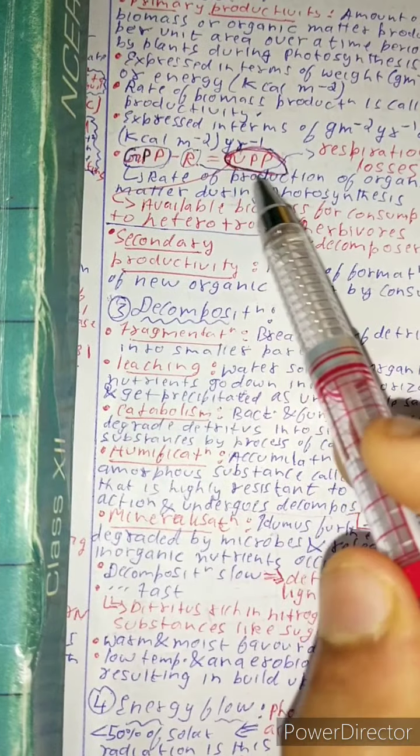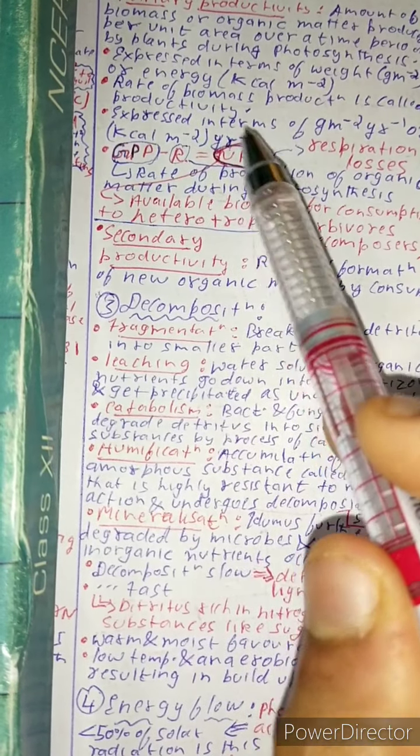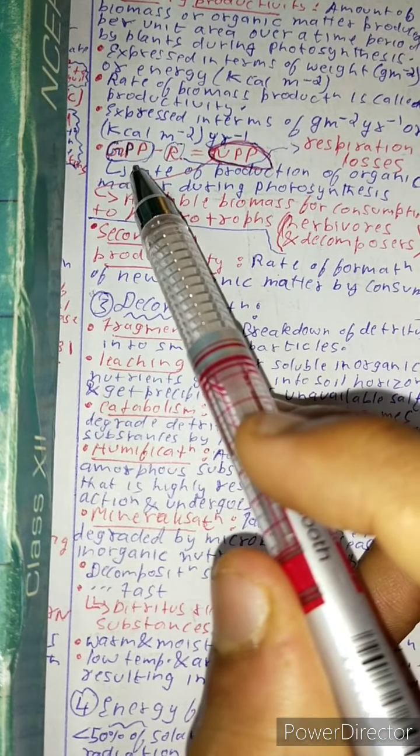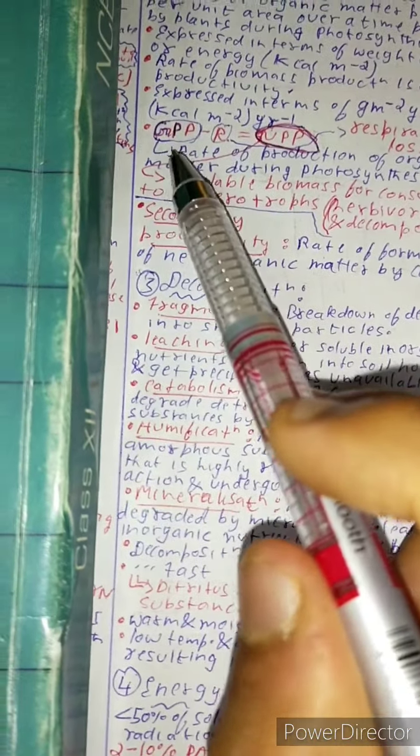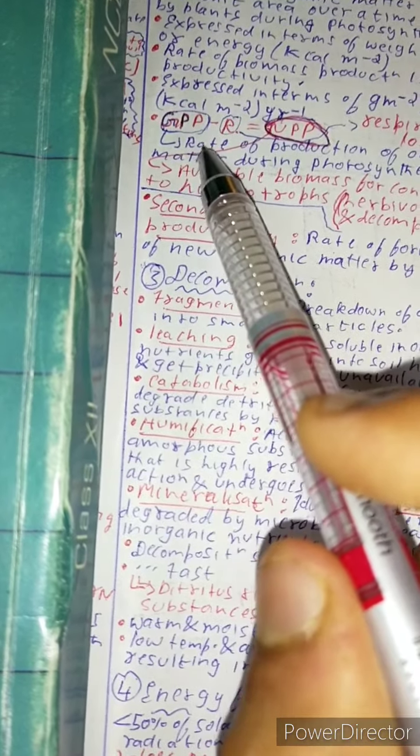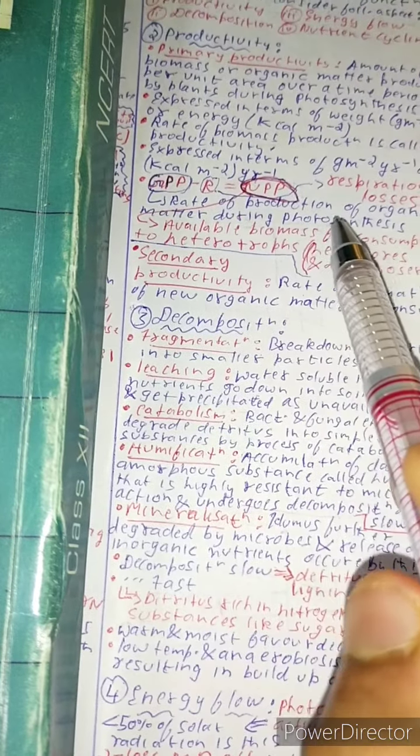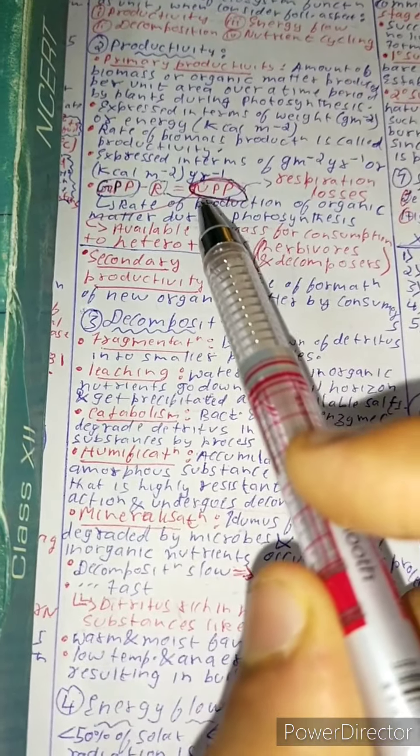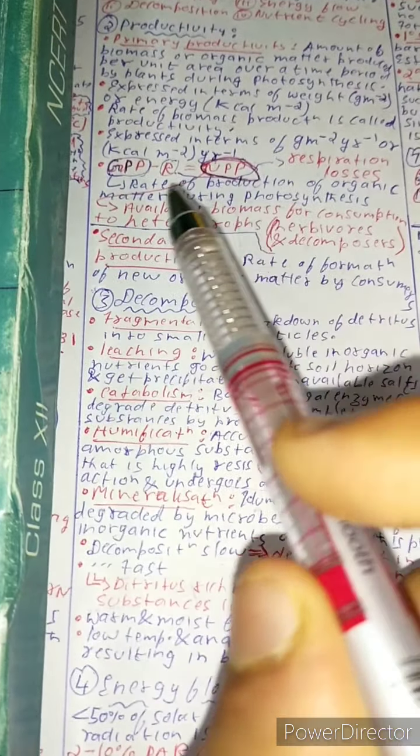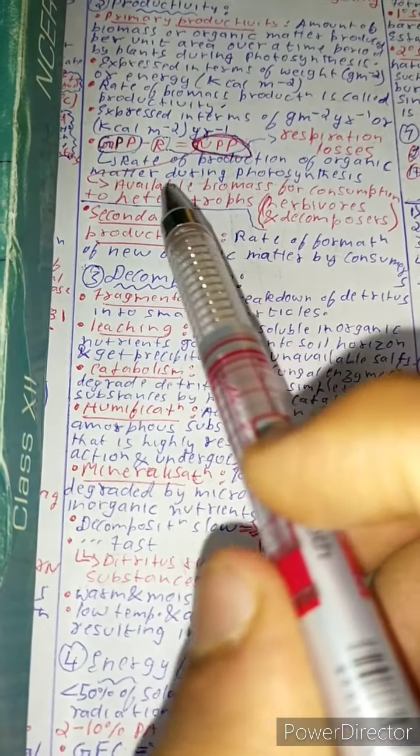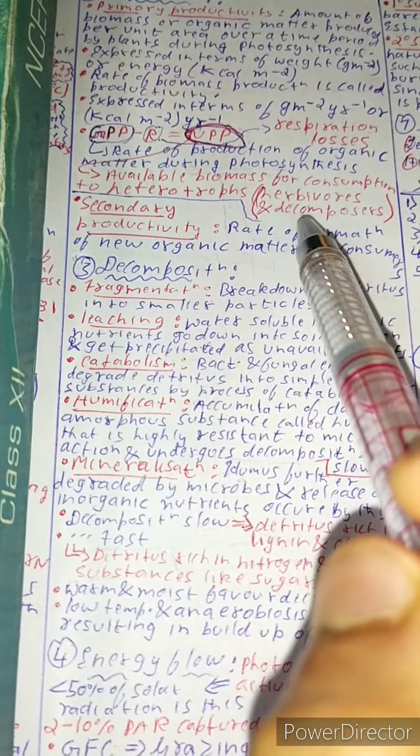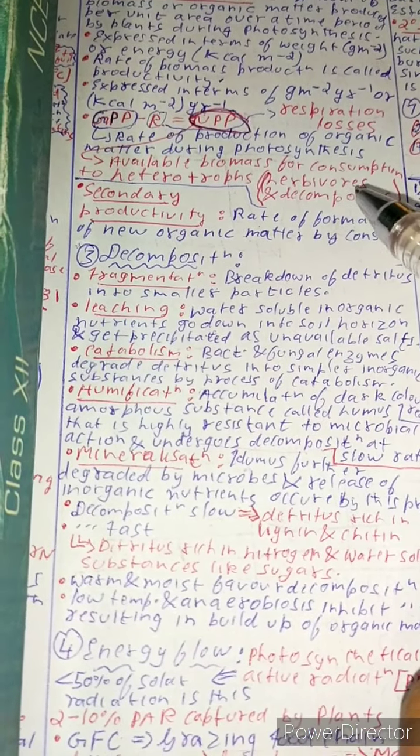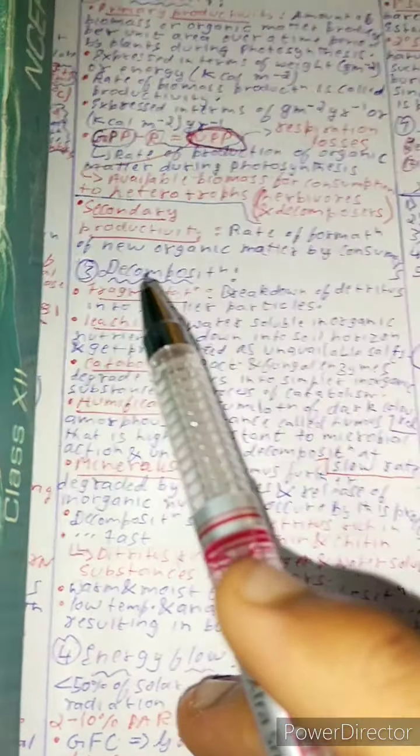Now the next part is net primary productivity. Net primary productivity is gross primary productivity minus respiratory loss. First of all, let's see what is gross primary productivity, GPP. Gross primary productivity is the rate of production of organic matter during photosynthesis. What is net primary productivity, NPP? Available biomass for consumption to heterotrophs - heterotrophs are herbivores and decomposers.